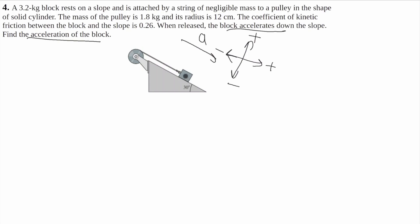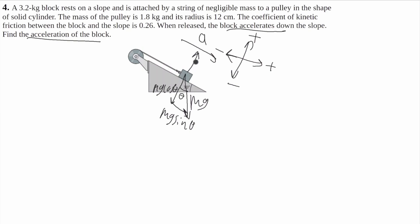Now I'm going to draw my free body diagram. This block will have gravity — that'll point straight down, and this will be Mg. I'll break gravity into its components. This will be the angle theta, same as the ramp. This will be Mg sine of theta, and this will be Mg cosine of theta. This block will have a normal force perpendicular to the ground — this will be Fn.